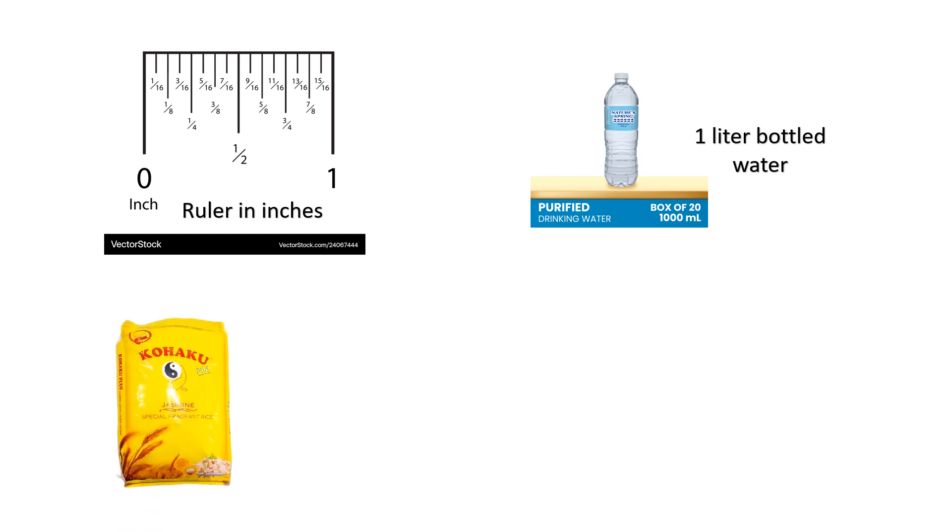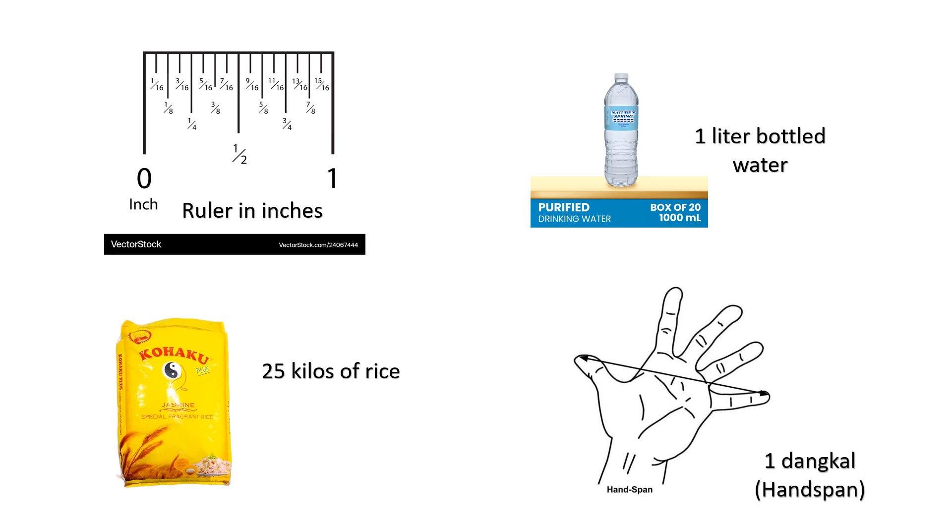How about this one? So this is 25 kilos of rice. And lastly, this one. Very good. So that is isang dangkal or handspan.